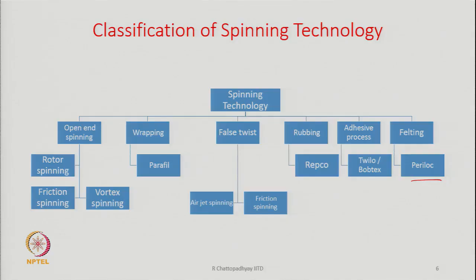So you see that spinning technologies can really be classified into 1, 2, 3, 4, 5, 6 different groups. You are going to learn about them in more detail gradually, but out of all these, some of the spinning systems are very, very popular and commercially very, very successful. So the emphasis will be more on those systems which are commercially successful and also running in the industry.